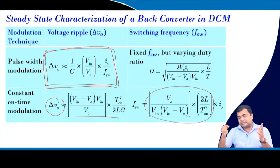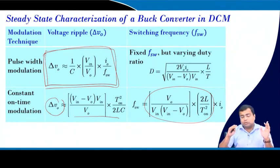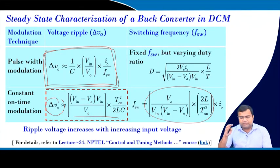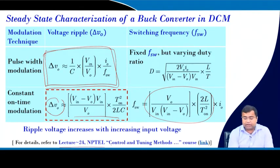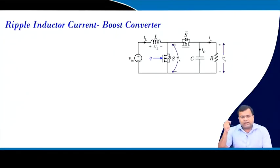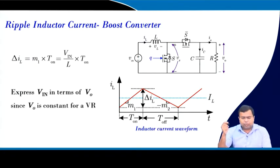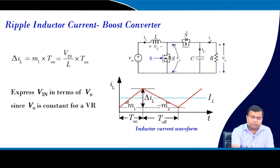Under constant on-time, the output voltage ripple is more or less insensitive to load, but the switching frequency reduces linearly with load current when input voltage is constant. If the input voltage changes, we have to use current-based constant on-time control, as discussed in lecture 24 of our earlier course.